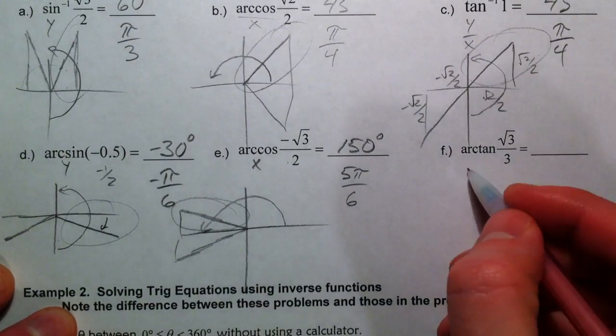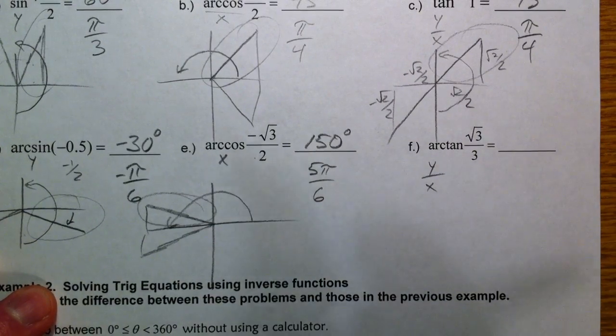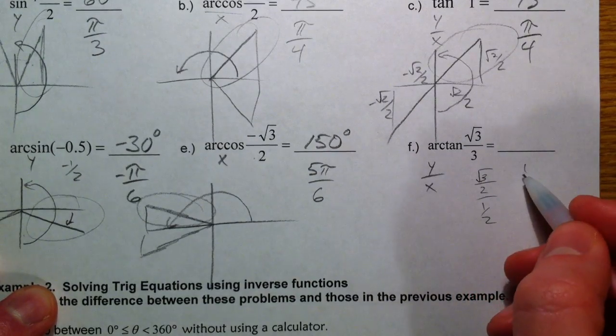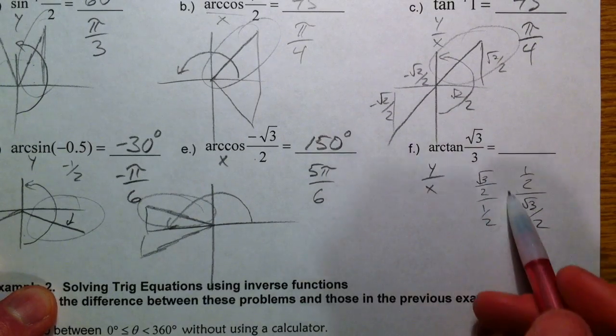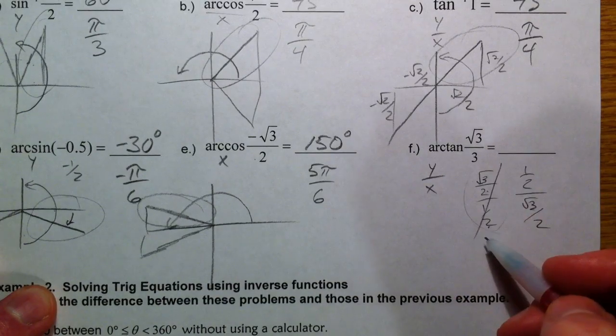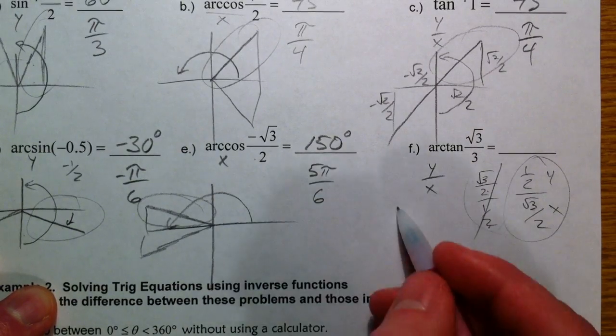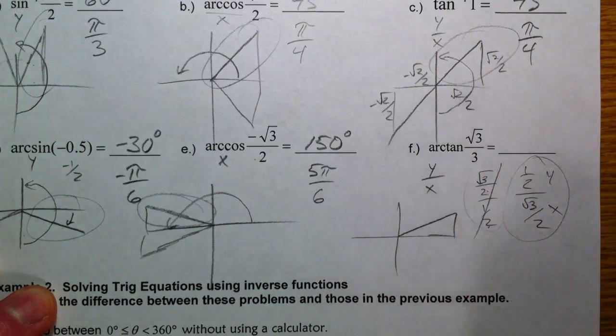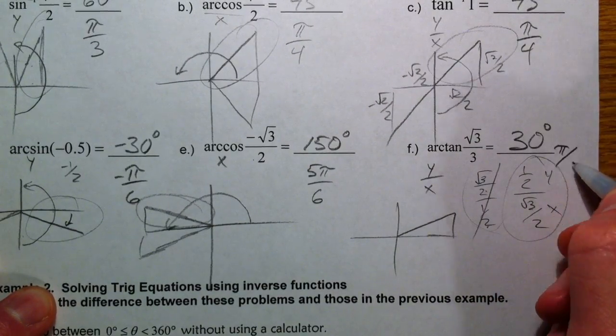Arc tangent - with tangent we have to think y over x. Which y over x would get me root three over three? It's got to be something with the root three in it. So here's our combinations: either root three over two divided by one half, or one half divided by root three over two. If it's this first one, the two's cancel out and my root three is left on top, so it's not going to be that one. I want this one - I want my y to be one half and my x to be root three over two. That is 30 degrees or pi over six if you prefer radians.